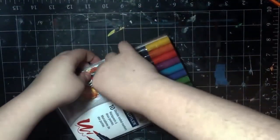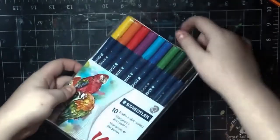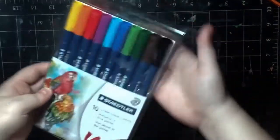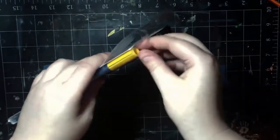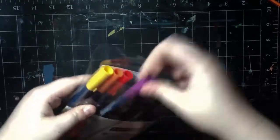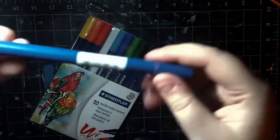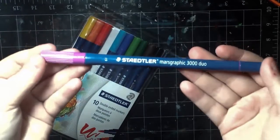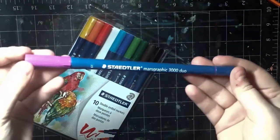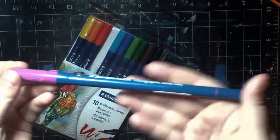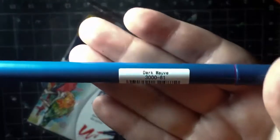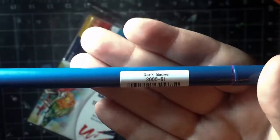So let's open it up and see what they look like. Alright, so I'm just gonna grab purple, or what I think is purple. So this is what the barrel of the marker looks like. It says Staedtler Mars Graphic 3000 Duo, and then it says the color name on the back. This is dark mauve.